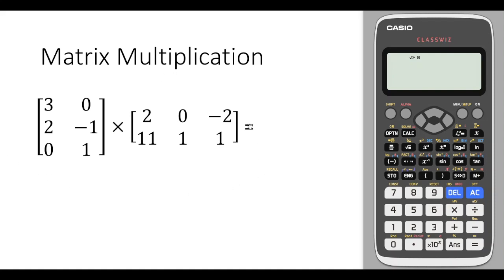To multiply two matrices with Casio Plus, we first select menu and then press four for matrices. Let's define the first matrix, matrix A. So I'm selecting one.